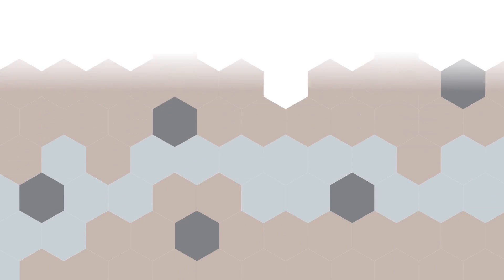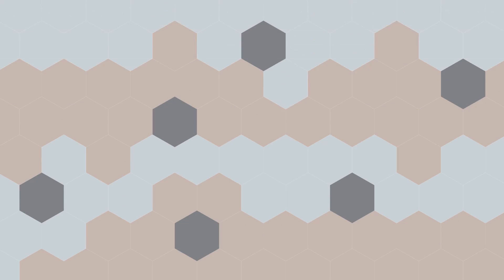Flow banding is alternating layers of light and dark minerals. It only occurs in silicic lava flows as the minerals separate, and so is almost always found in rhyolite.